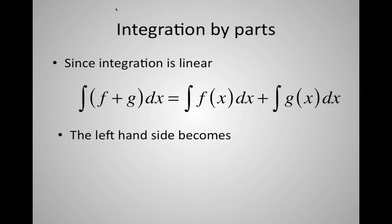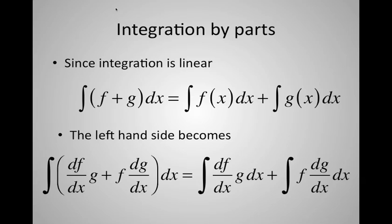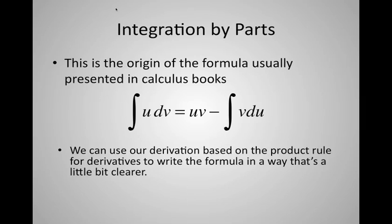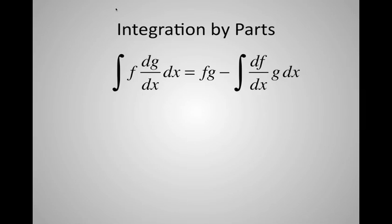On the other side, we use the fact that integration is linear — the integral of f plus g is the integral of f plus the integral of g. So the integral of (df/dx)·g + f·(dg/dx) splits into two integrals. This is the origin of the formula in calculus books: integral of u dv = uv minus integral of v du. Written more clearly: integral of f·(dg/dx) dx = f·g minus integral of (df/dx)·g dx. All that is, is the formula derived using the product rule.